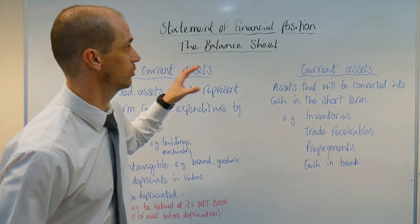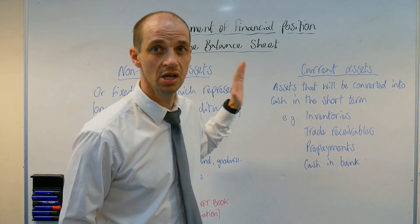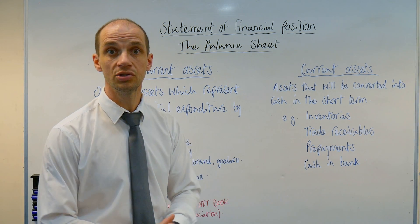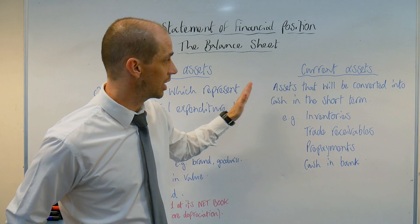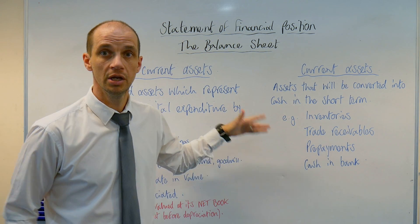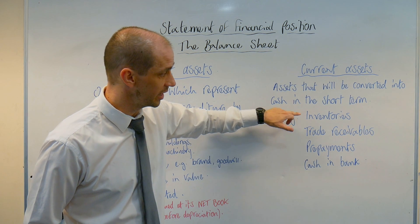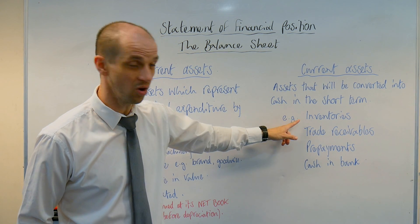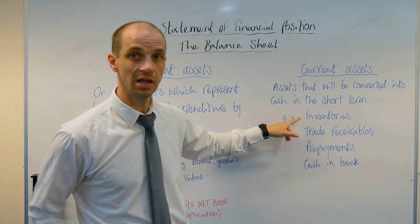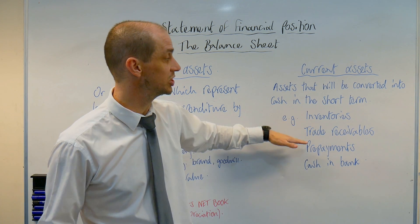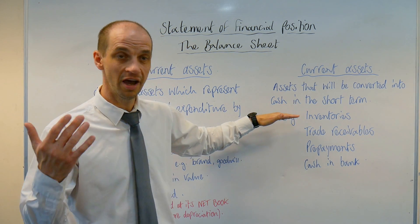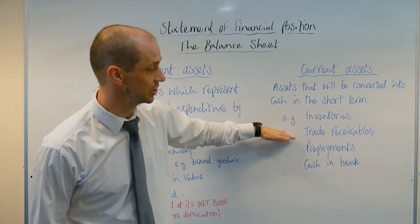On the other hand, we've also got current assets. Current assets are simply assets that are likely to be used up within a year — they're likely to be converted into cash within the short term — and examples are inventories. Inventory stock is the least liquid current asset, and as the least liquid current asset, it will appear as the highest placed current asset of the business.